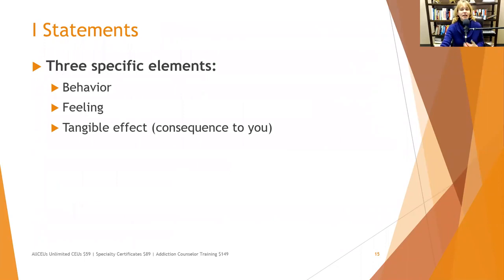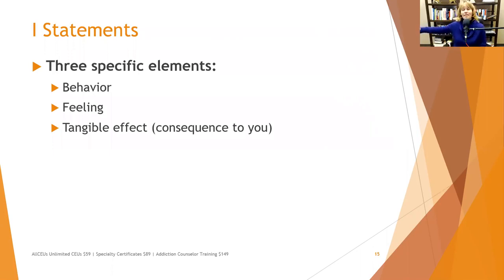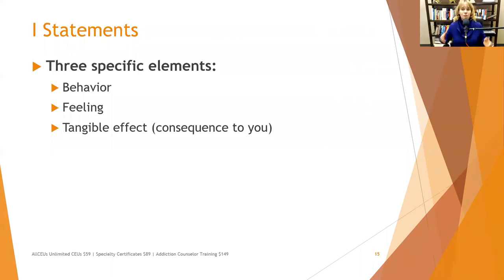I-statements have three specific elements: a behavior, a feeling, and a tangible effect. For example: 'I would appreciate it if you would bring down your laundry every Friday because it'll make it easier for me to do laundry on Saturday morning.' That gives them what it is, how it's going to benefit me, and how it's going to benefit them.